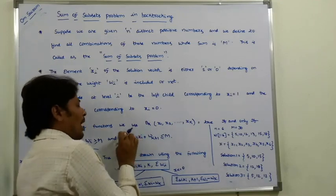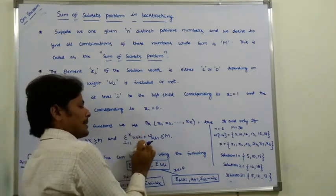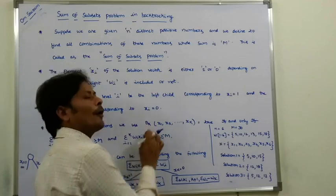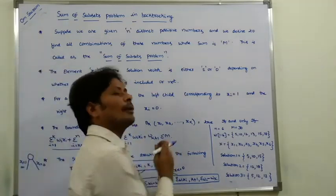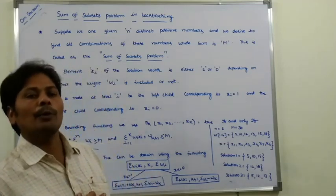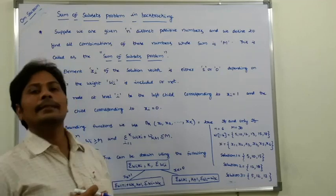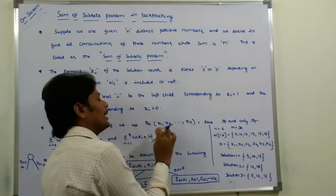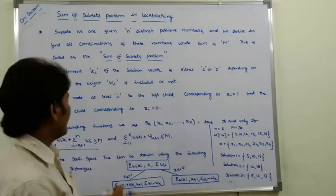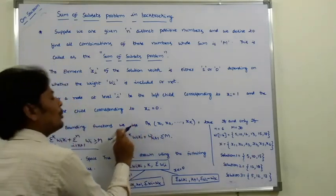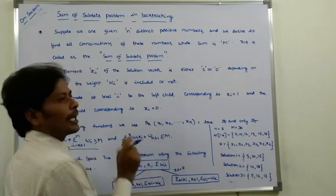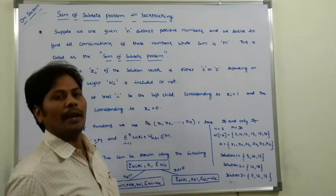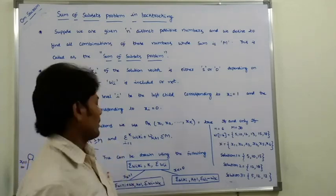The second condition: sigma(i=1 to k) of wi*xi, plus the weight of the (k+1)-th object, must be less than or equal to capital M. If this holds, we do not kill that node — it can be added to the solution vector, because the sum of weights in the solution vector is less than or equal to M.